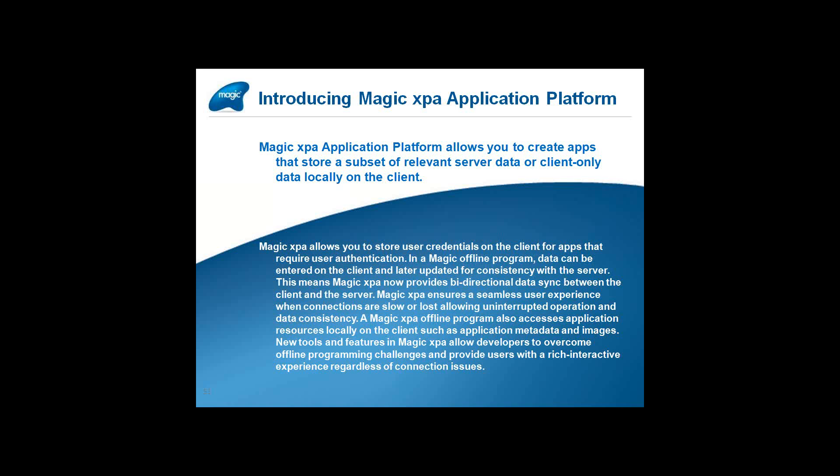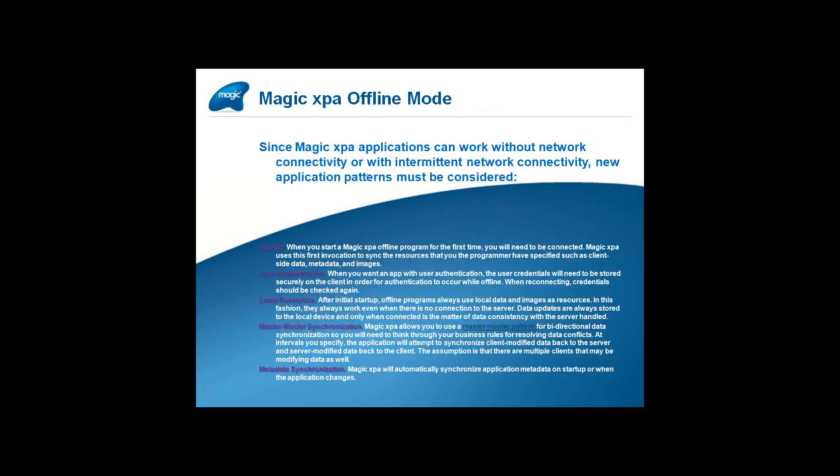An offline program also accesses application resources locally on the client, such as application metadata and images. New tools and features in Magic XPA allow developers to overcome offline programming challenges and provide users with a rich, interactive experience regardless of connection issues. Since Magic XPA applications can work without or with intermittent network connectivity, new application patterns must be considered — including startup, user authentication, local resources, master-to-master synchronization, and metadata synchronization.